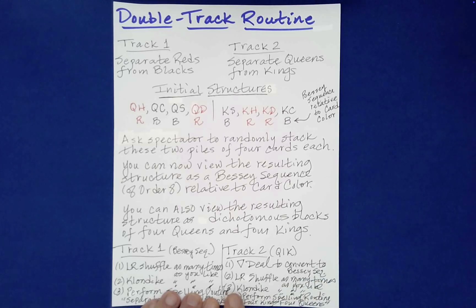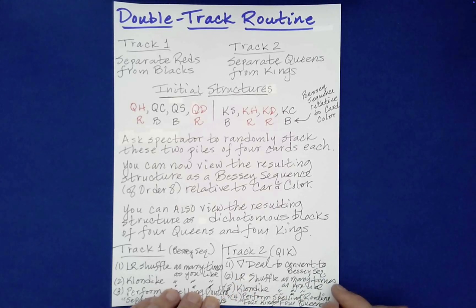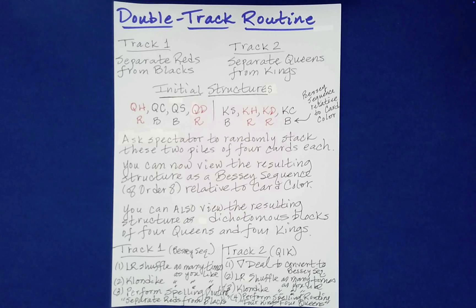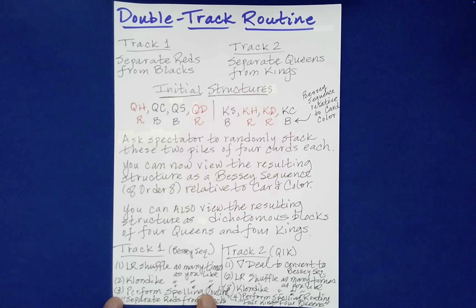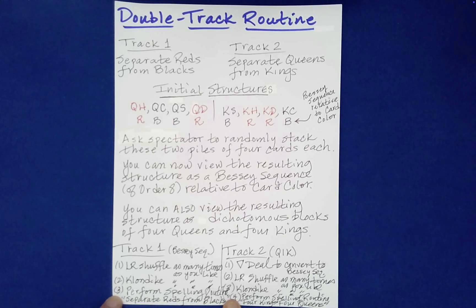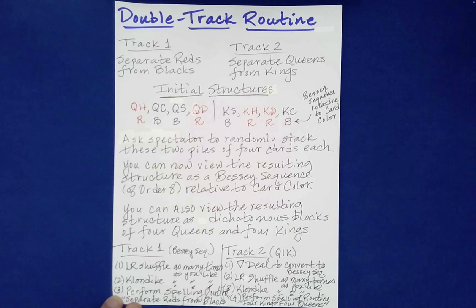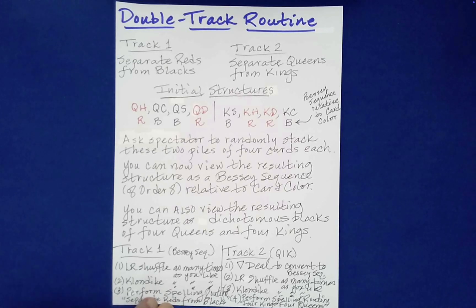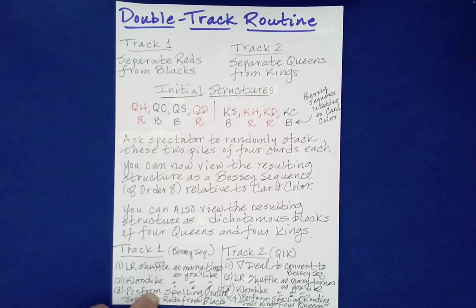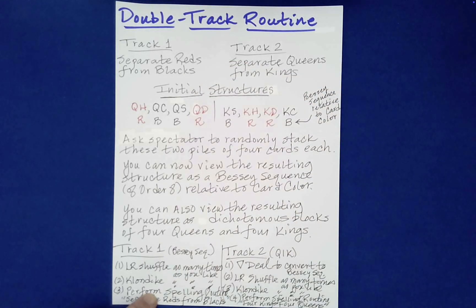And then when you've mixed the cards to the content of the spectator, whether it's track one or track two, you're going to perform kind of a spelling routine or spelling system. I do want to point out a subtlety that's important. You separate the reds from the blacks, removing one card to the bottom for each letter, including the E, and then the next card goes down. And then you do R-E-D-S, and then the next card goes down.